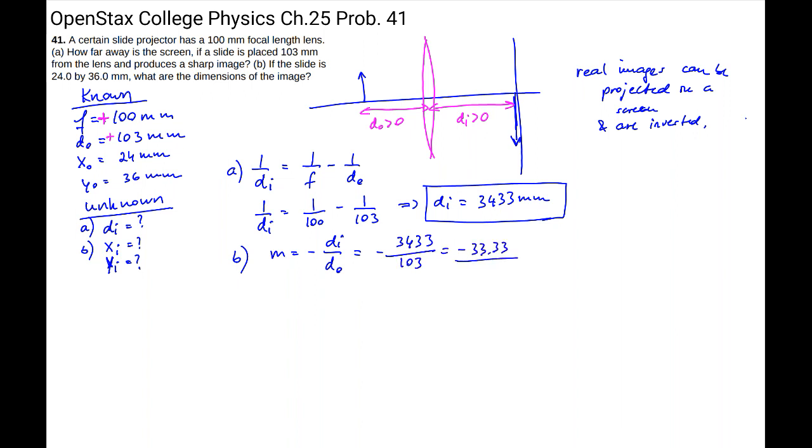So looking at this, we got a negative number. This negative number for the magnification means that the image is upside down. And that is correct for the problem that we're working with for a converging lens that forms a real image. And the real image is upside down. So we get a negative magnification. So far we're good.